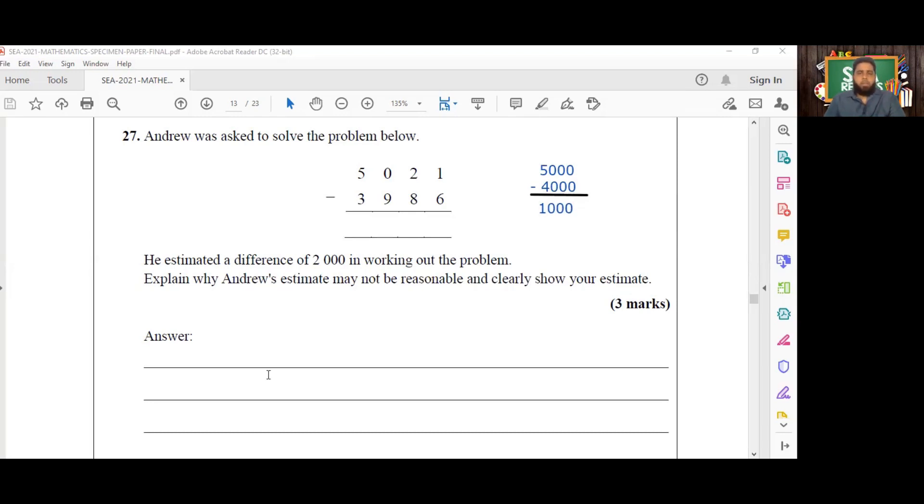In writing your explanation of why Andrew's estimate may not be reasonable, remember to include the fact that he only looked at the thousands digits when making his estimate. However, that was not a wise strategy since if he is going to be making an estimate based on thousands, he would definitely have to look at the hundreds in both of these numerals to determine whether to round them up or round them down.